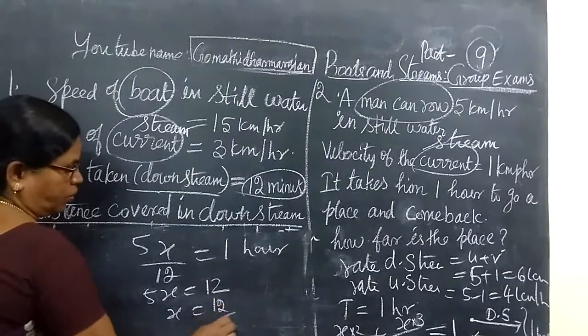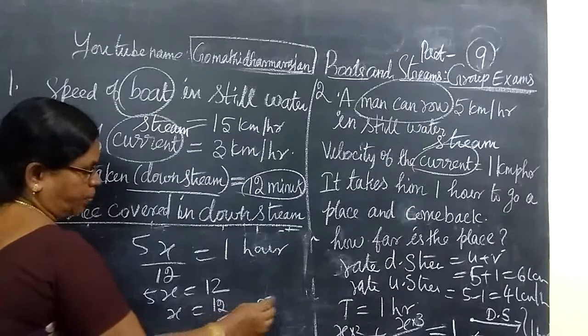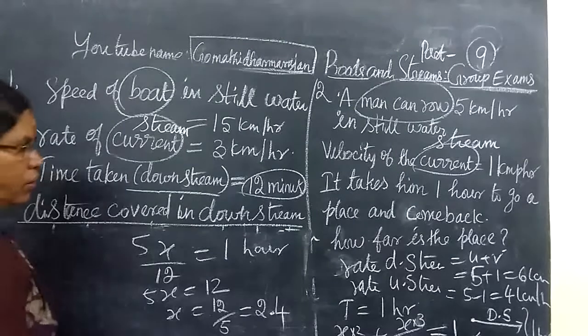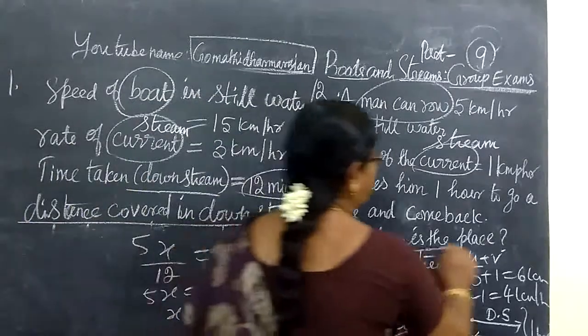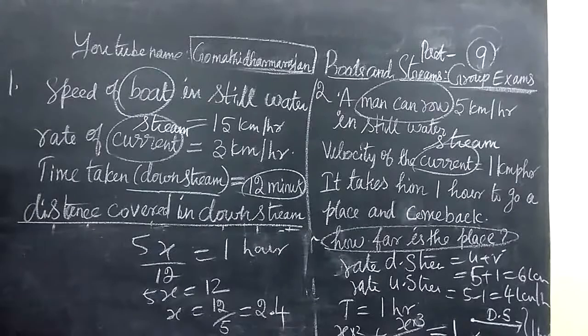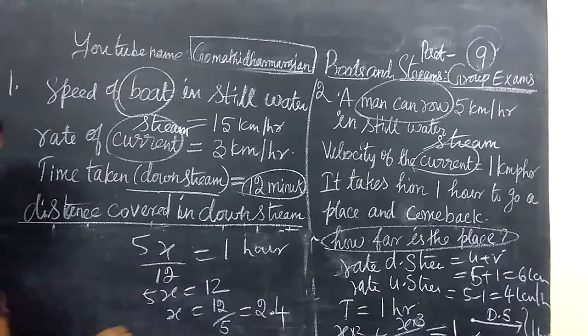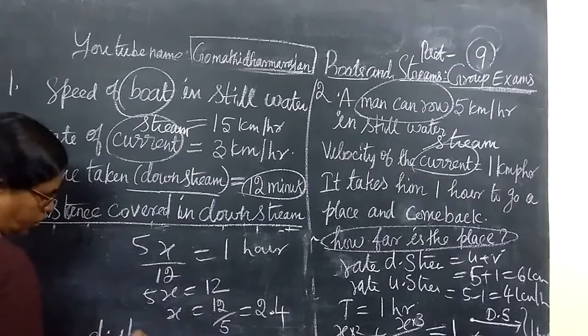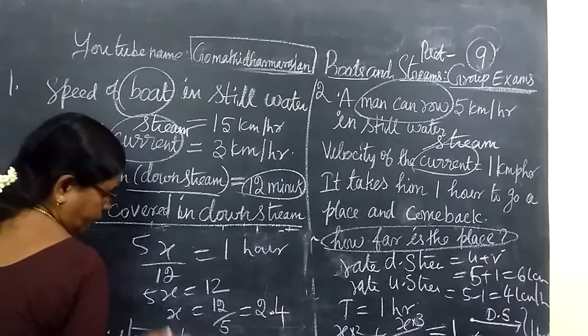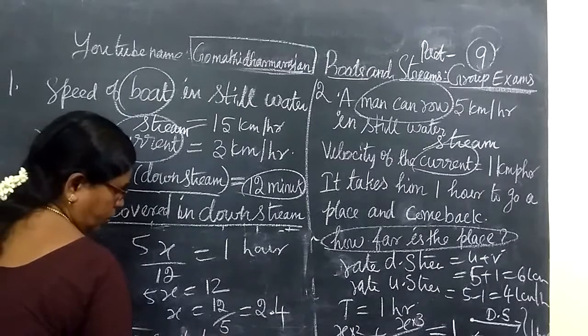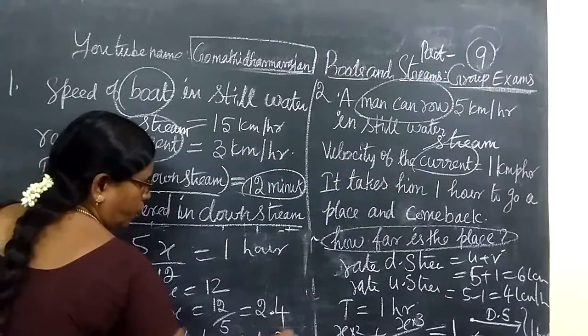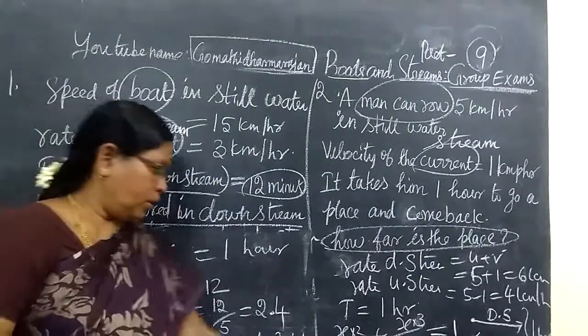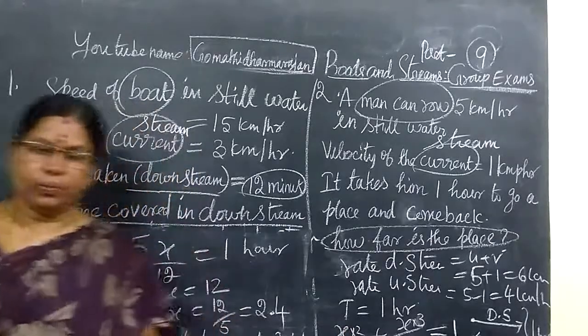So x equals 12 by 5, 2 point 4. So what you have to find, total time taken? No. How far is the distance? How far is the distance we are finding? So x equals 2.4 km. That will be what we want to find. Thank you.